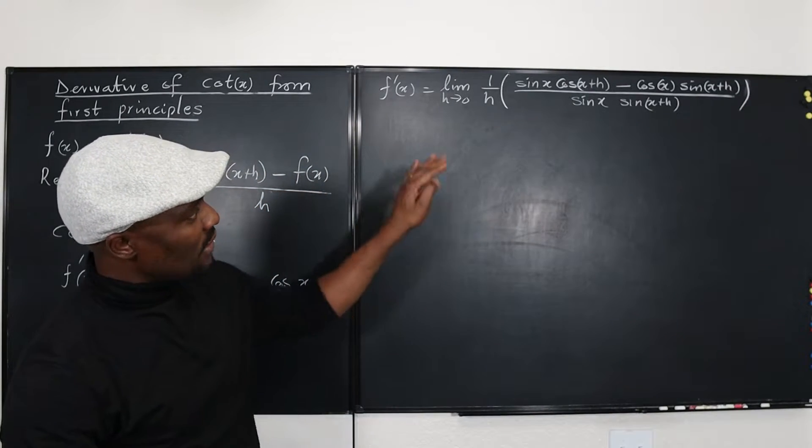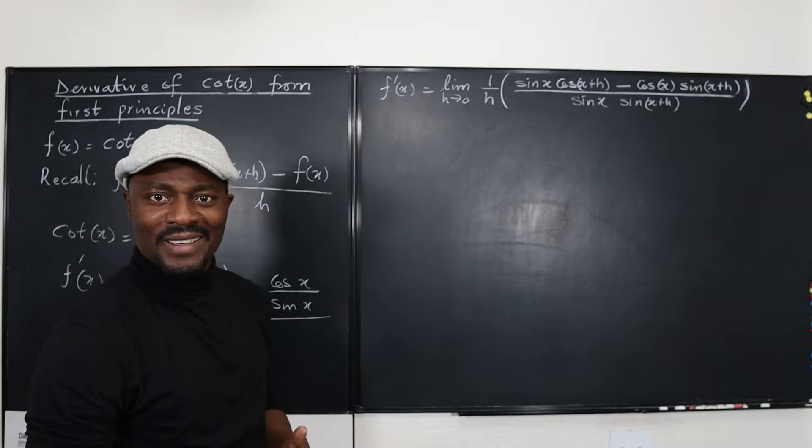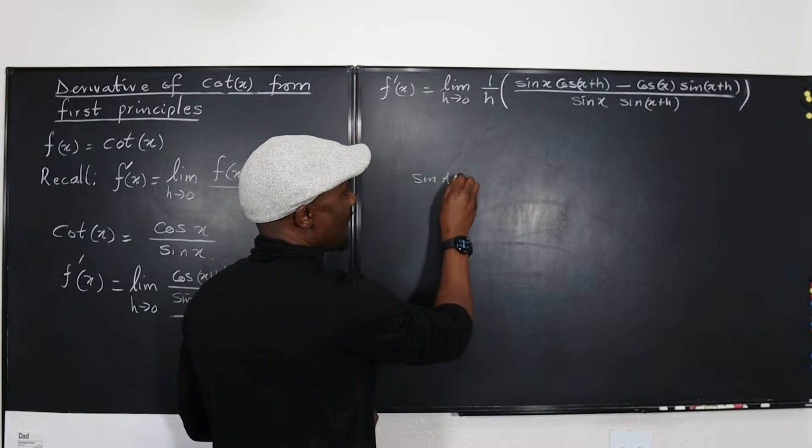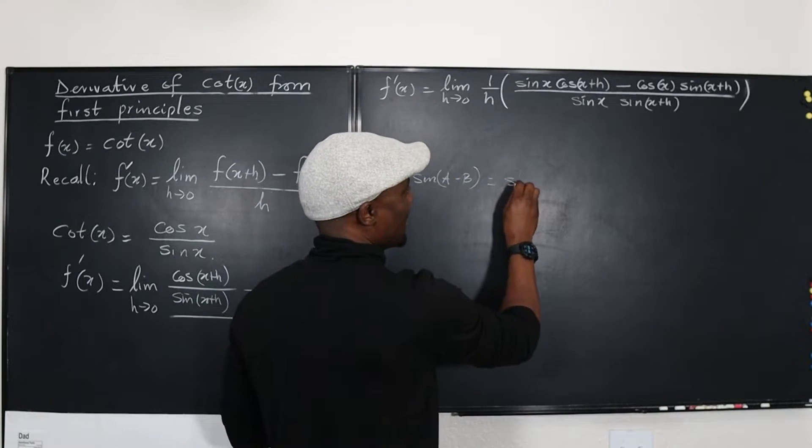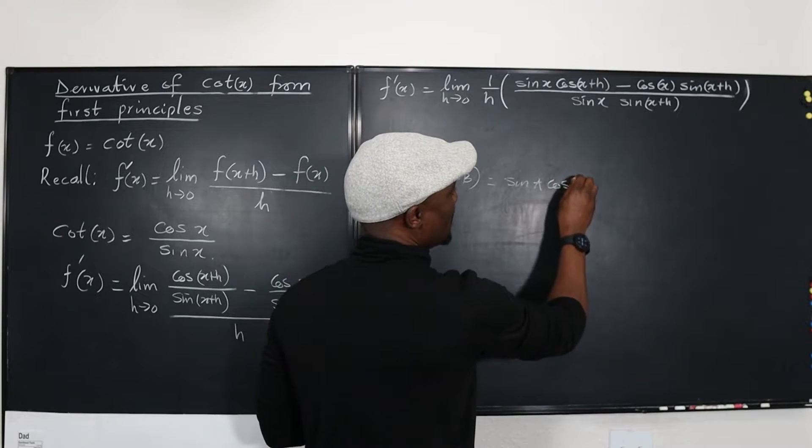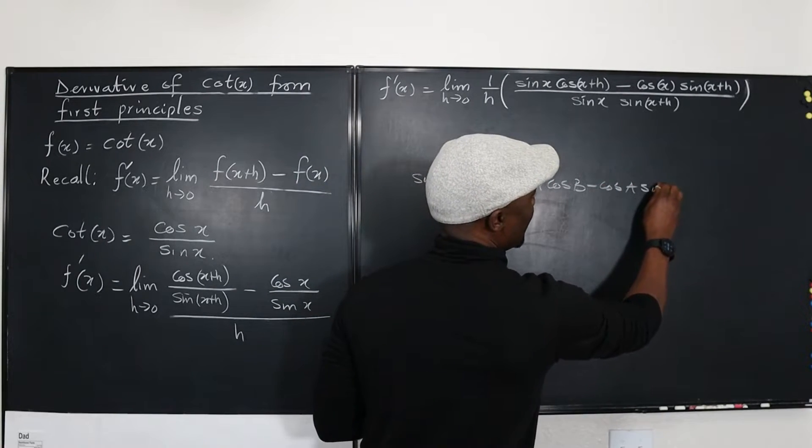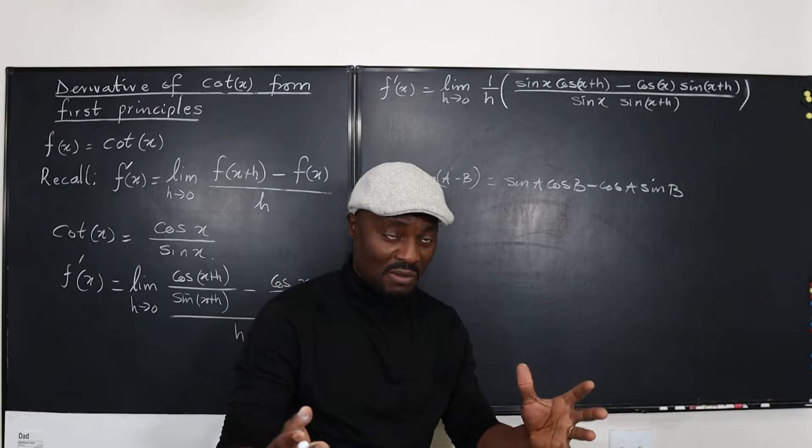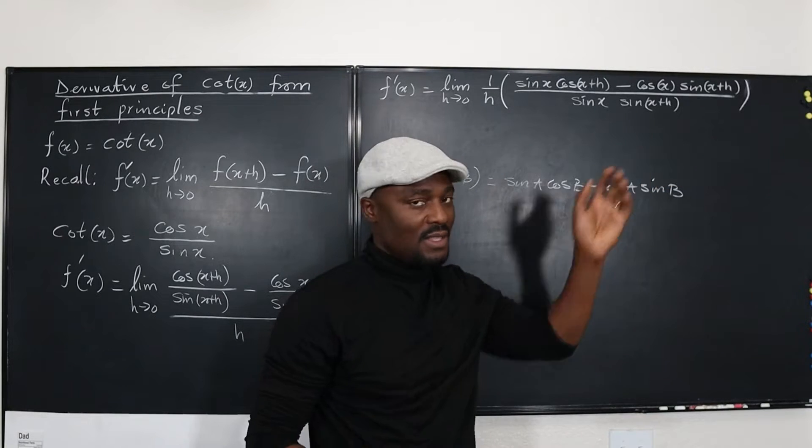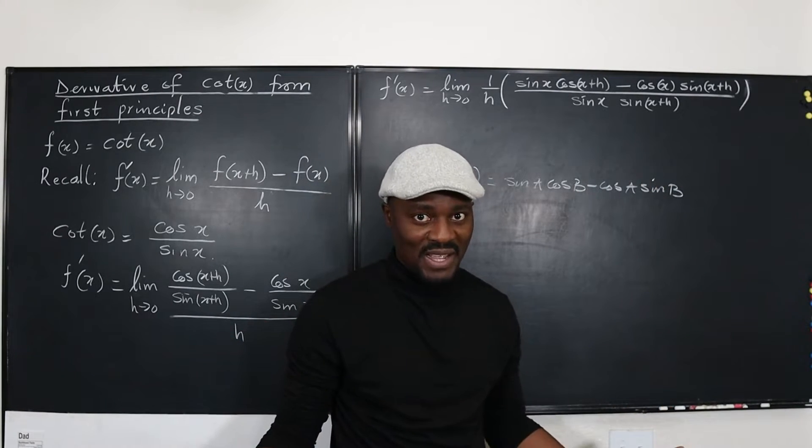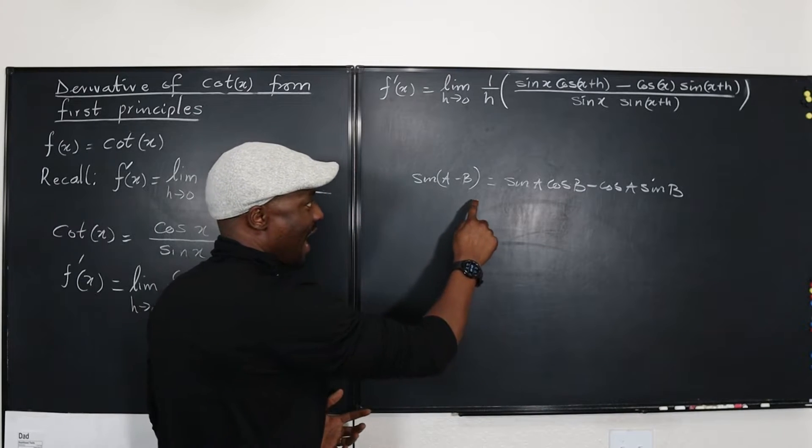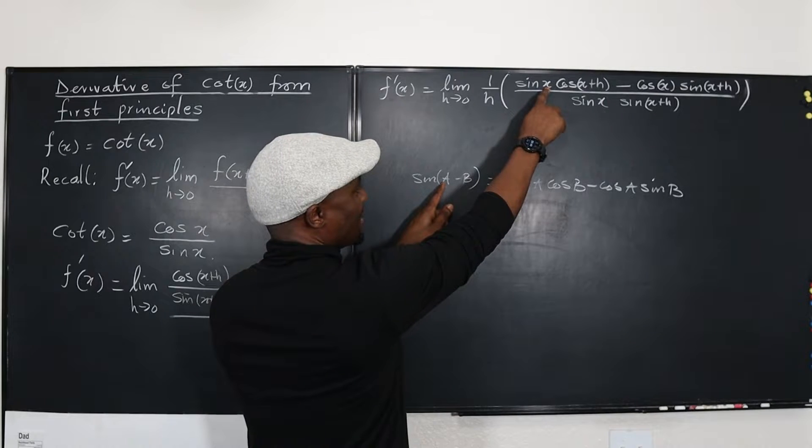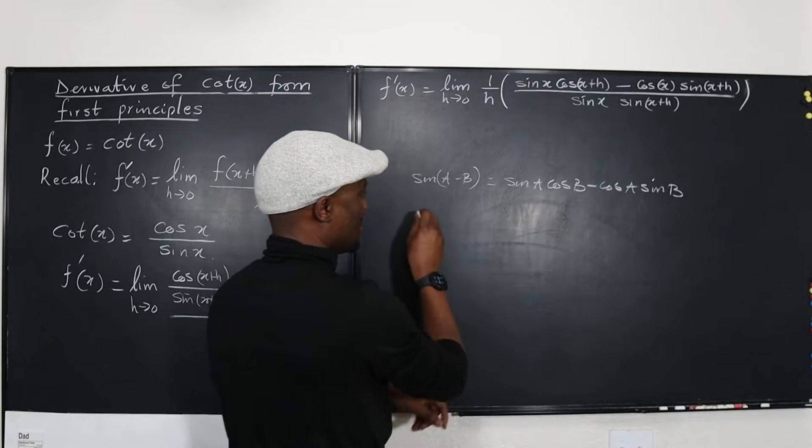Now, what does the top look like? If you remember your trig identities, whenever you have sine a minus b, you'll write it as sine a cosine b minus cosine a sine b. And what we have on top, remember what's on top is always the problem. Don't touch what's under. It never gives you any problem. The top is what you need to simplify. So now, what I have is, it looks like my a is x and my b is x plus h.